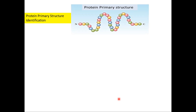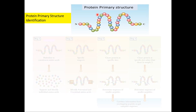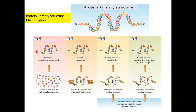For identification of protein primary structure, the first requirement is a pure protein sample — the test tube must contain only that specific protein with no other proteins present. Once pure protein is obtained, step one is to break up the peptide bonds enzymatically or chemically to convert it into monomers. Step two involves applying a chemical — for example FDNB — to identify and remove amino acids one by one from the N-terminal.